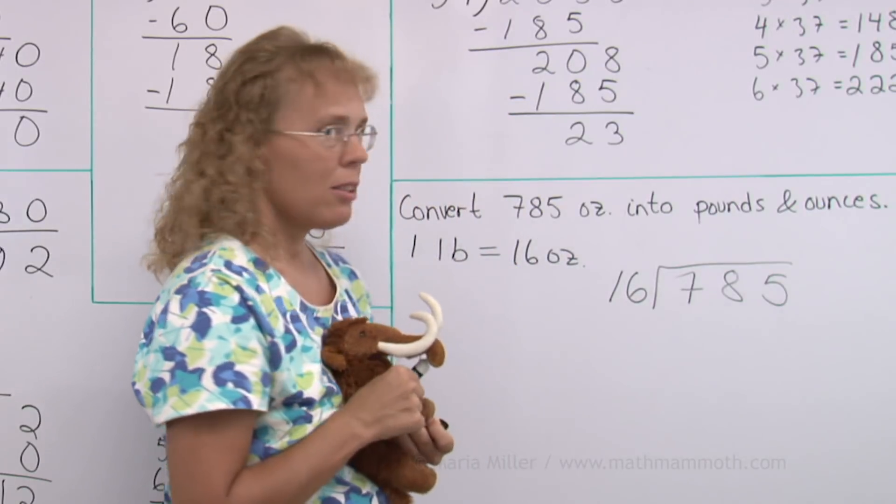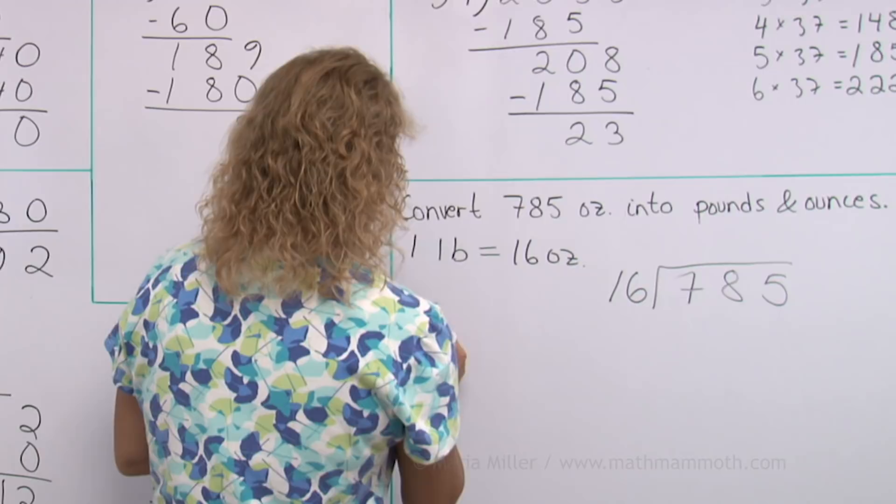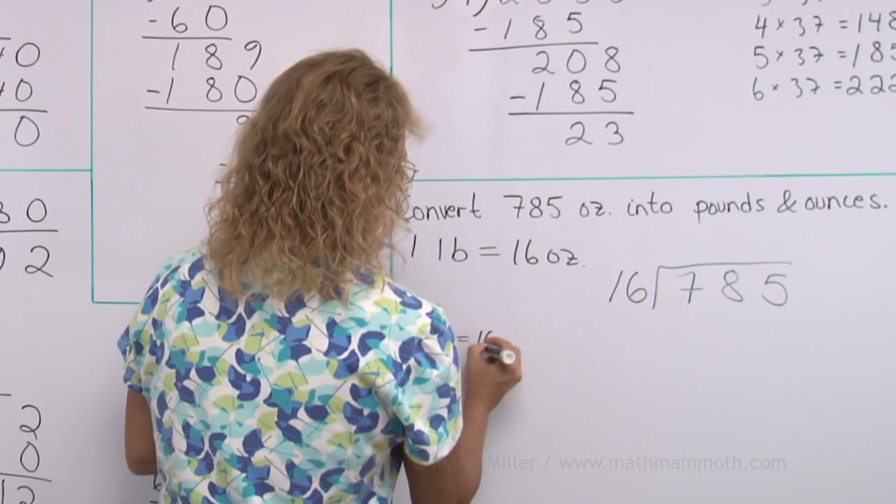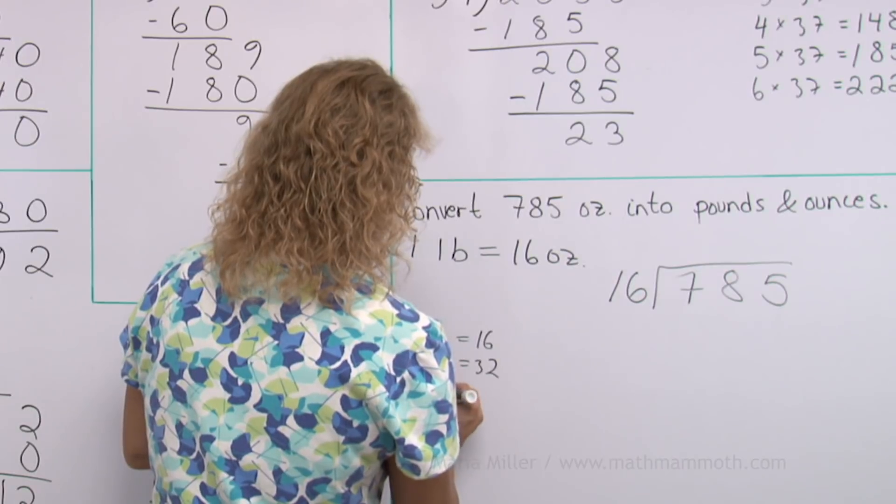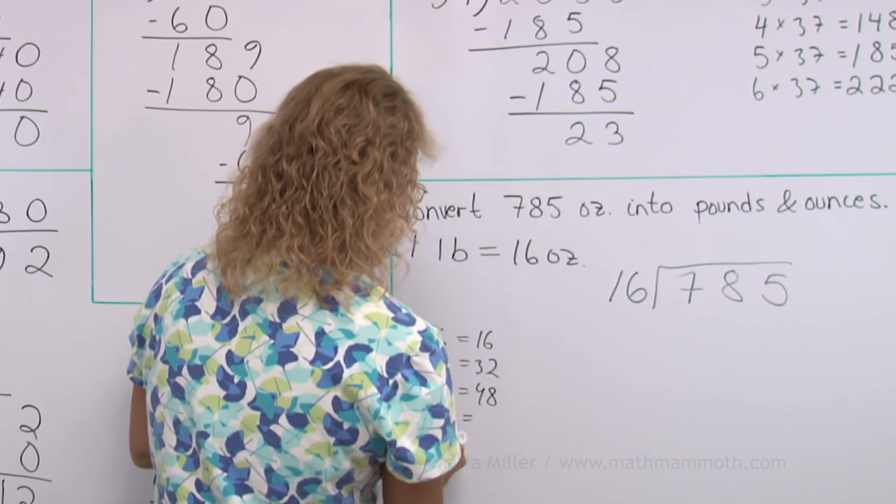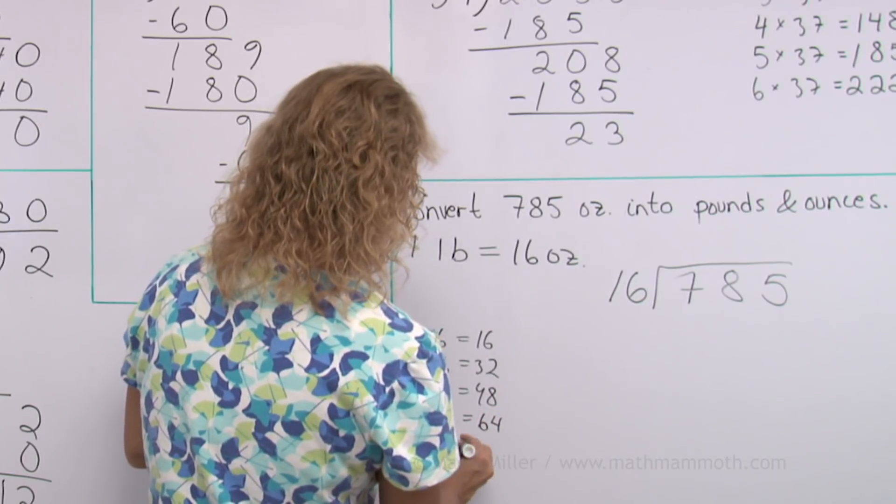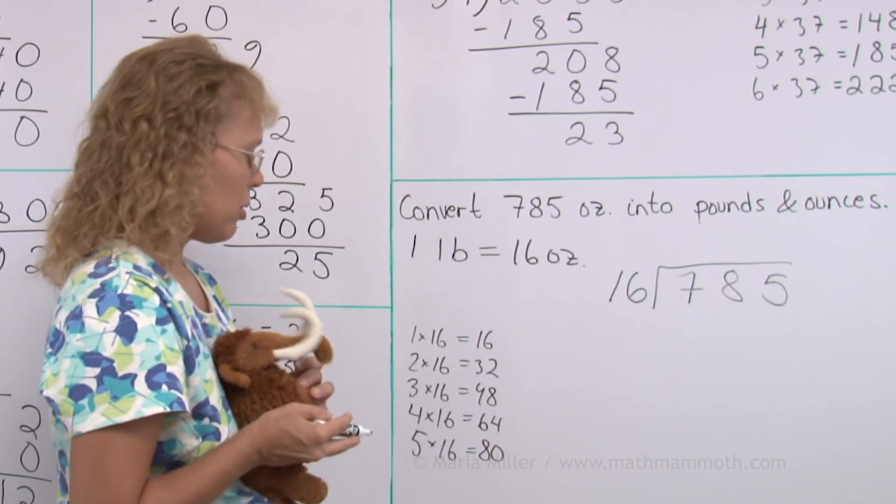Alright. Should we build a multiplication table for 16 too? Let me do that real quick. 1 times 16 equals 16. And 2 times 16 equals 32. And 3 times 16 is 48. And 4 times 16 equals 64. And 1 more. We might not need all of them. Let's just do it up to 5 times 16 for starters.